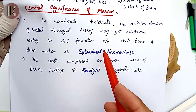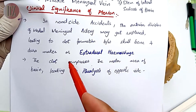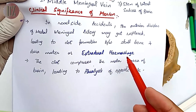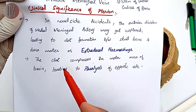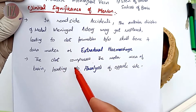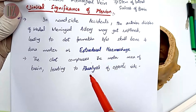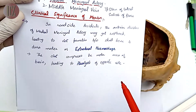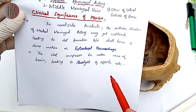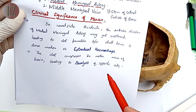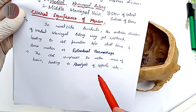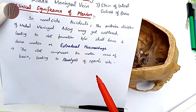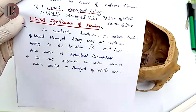Rupture of the artery leads to clot formation between the skull bone and the dura mater — this is called extradural hemorrhage. This clot compresses the motor area of the brain, leading to paralysis of the opposite side. That is why the pterion is the most important point of the skull from both clinical and examination points of view. Thanks for watching.